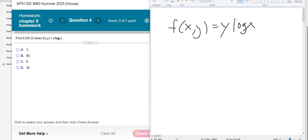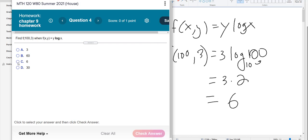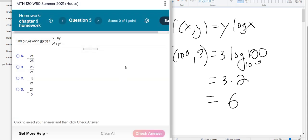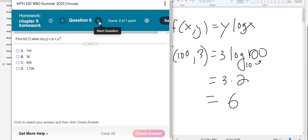So I'm going to put in 100 for x and 3 for y would be 3 log of 100. You have a log key on your calculator, but that's 2, because the exponent you raised 10 to to get 100 is 2. So the answer is 6. Again, just substitution.